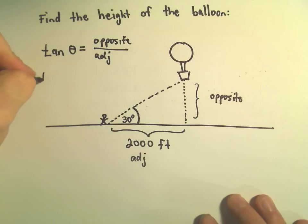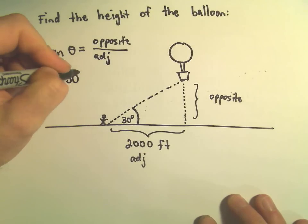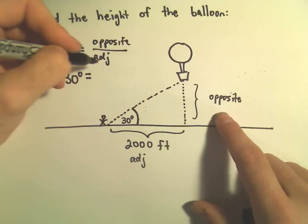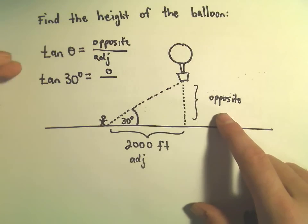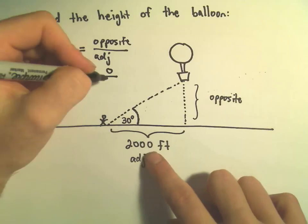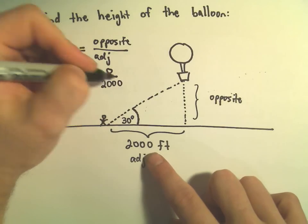So in this case, we have tangent of 30 degrees. That's going to equal the opposite side. We'll call it maybe O for opposite, over the adjacent side, but we know that's 2,000.